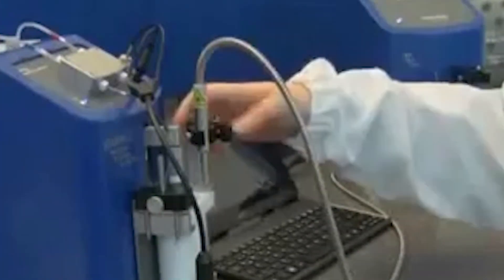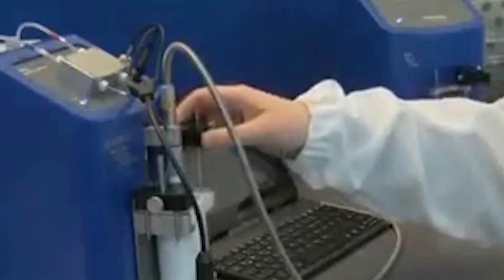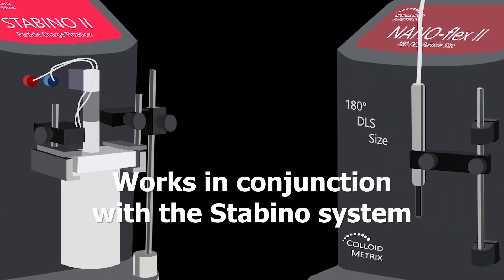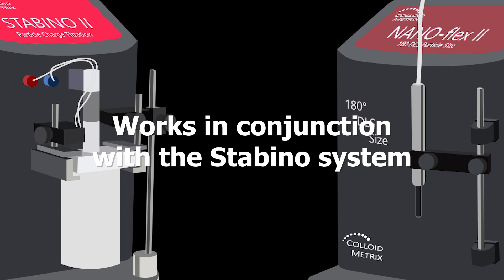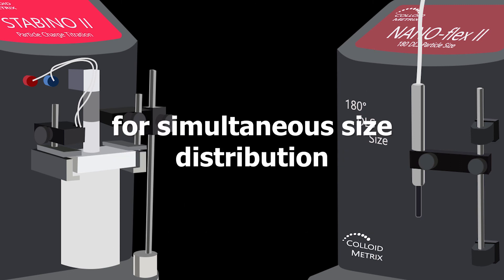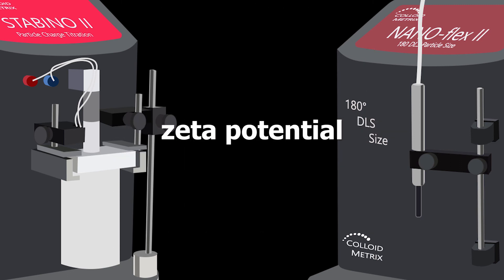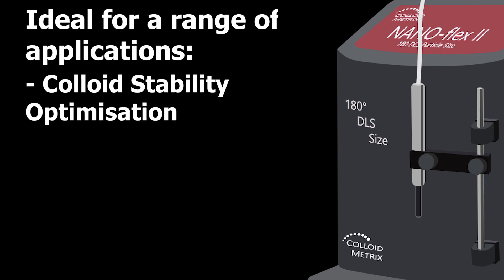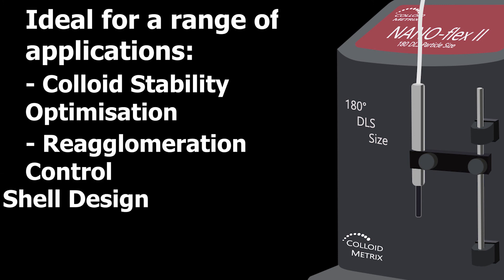This standalone particle size analyzer can not only be used for inline applications, featuring a unique dipping probe for in situ size measurements, but can also work in conjunction with the Stabino system for simultaneous size distribution, zeta potential, and titration stability measurements. The Nanoflex is ideal for a range of applications including colloid stability optimization, re-agglomeration control, core-shell design, and dispersing efficiency development.